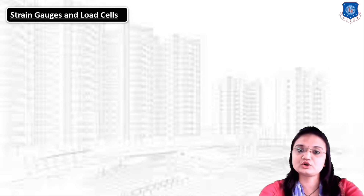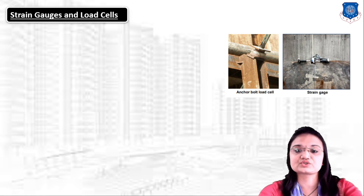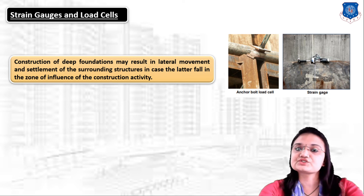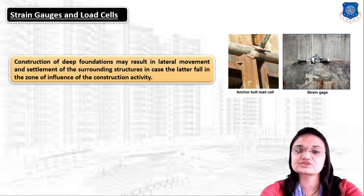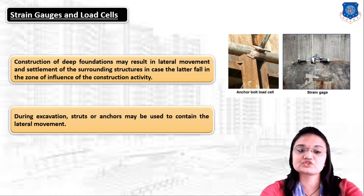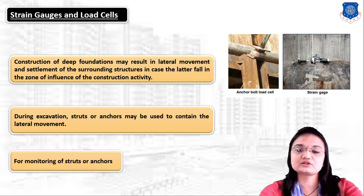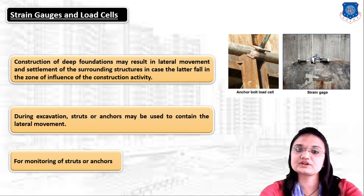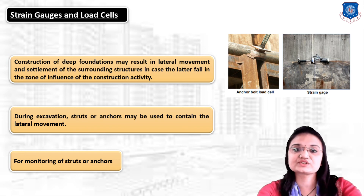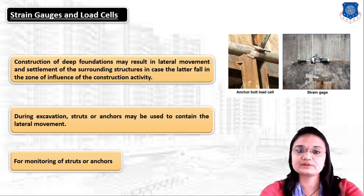Next are strain gauges and load cells. As you can clearly see in this image, here is how we can install a strain gauge and load cell. Construction of a deep foundation will result in lateral movement and settlement of surrounding structures if they fall in the zone of influence of the construction activity. During excavation, struts or anchors may be used to contain lateral movement, so we use strain gauges and load cells to monitor struts and anchors. The strain gauge measures strain in struts and anchors, while the load cell measures the load or weight passing through it.